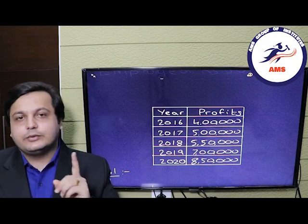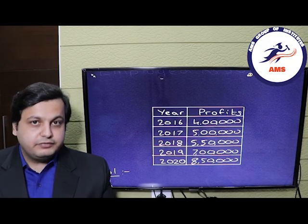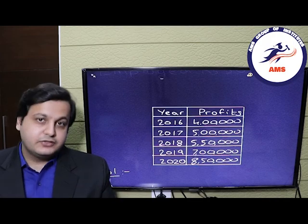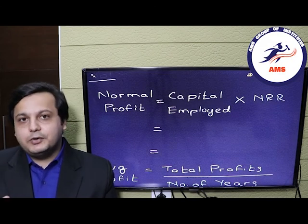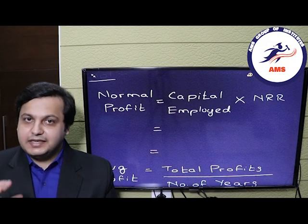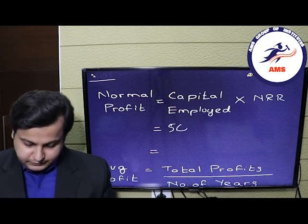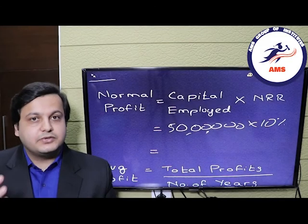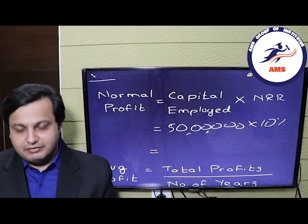The first step is to calculate the normal profits. The formula is capital employed multiplied by the NRR. Capital employed is 50 lakh rupees and the NRR is 10%, so: 50 lakhs × 10% = 5 lakh rupees. The normal profits are rupees 5 lakhs.